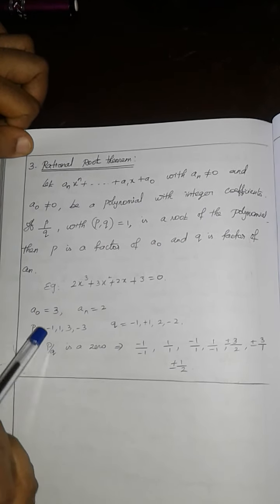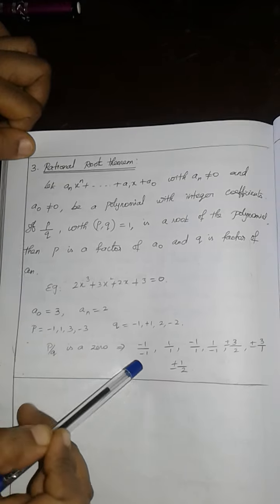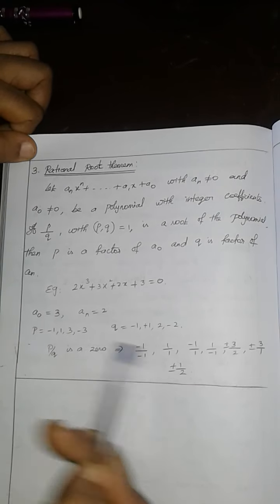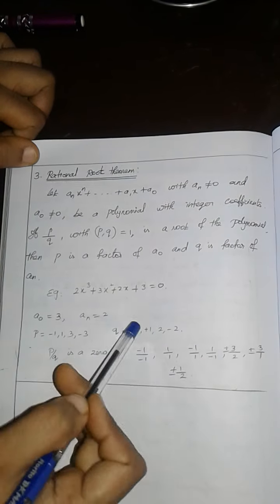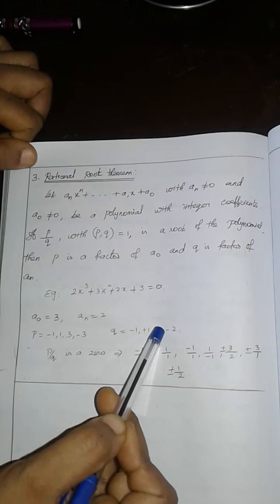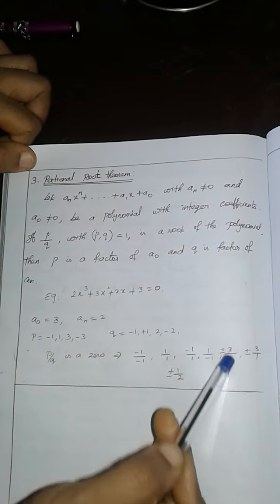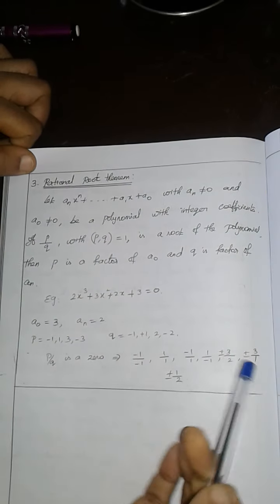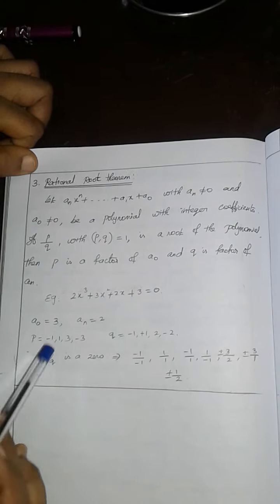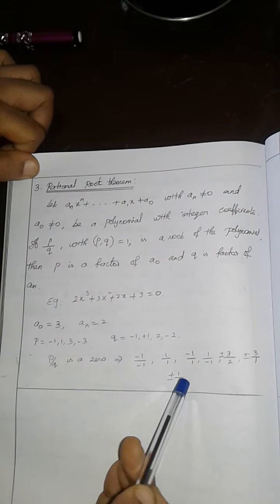Then p by q. While p by q becomes plus minus 1 by minus 1, minus 1 by plus 1, 1 by 1, 1 by minus 1, 3 by 2, minus 3 by 2, plus or minus 3 by 2, 3 by 1, minus 3 by 1, plus or minus 3 by 1, 1 by 2, minus 1 by 2, plus or minus 1 by 2.